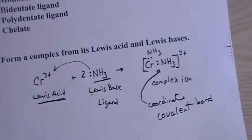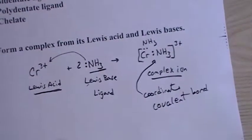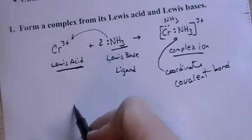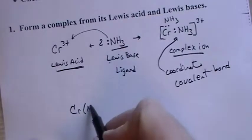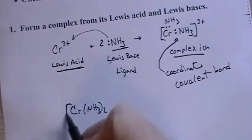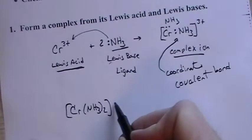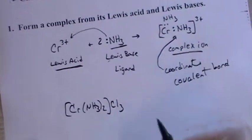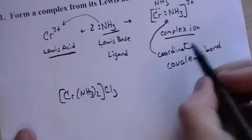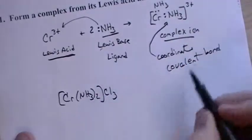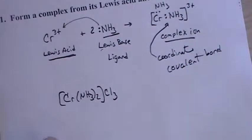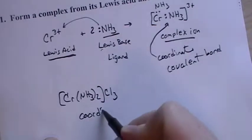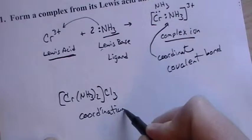Now, once we've created what's called a complex ion. If we then took that, so we'll just reduce it down in size here, and we added on three chlorines to balance it out. Now, this would be a complex ion or coordinate complex ion, and this is called a coordination compound because it's no longer an ion, so this is a coordination compound.